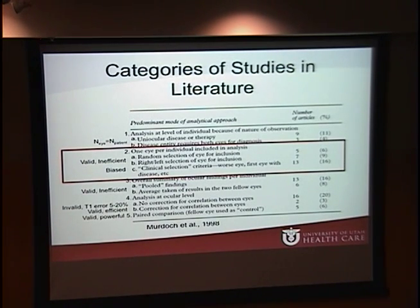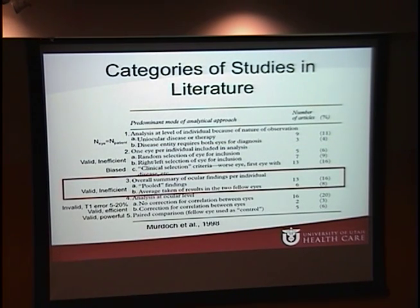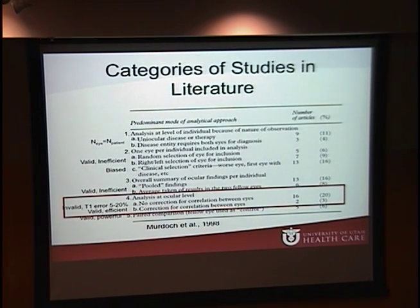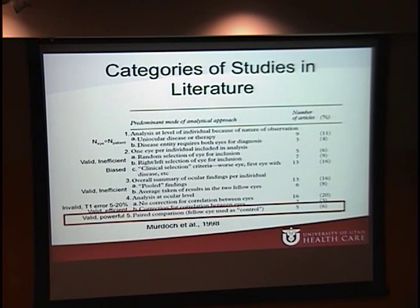Methods for selecting a single eye include random selection, choosing only right or left eye, or using clinical criteria. These methods are valid but often inefficient and can introduce inclusion bias. The third category is summarizing data using pooled data or averaging results — again valid but often inefficient. The fourth category is analysis at the ocular level with two eyes per patient. The first subgroup did not correct for correlation of the eyes, approximately 20% of studies, which is invalid and increases type one error by 5 to 20%.